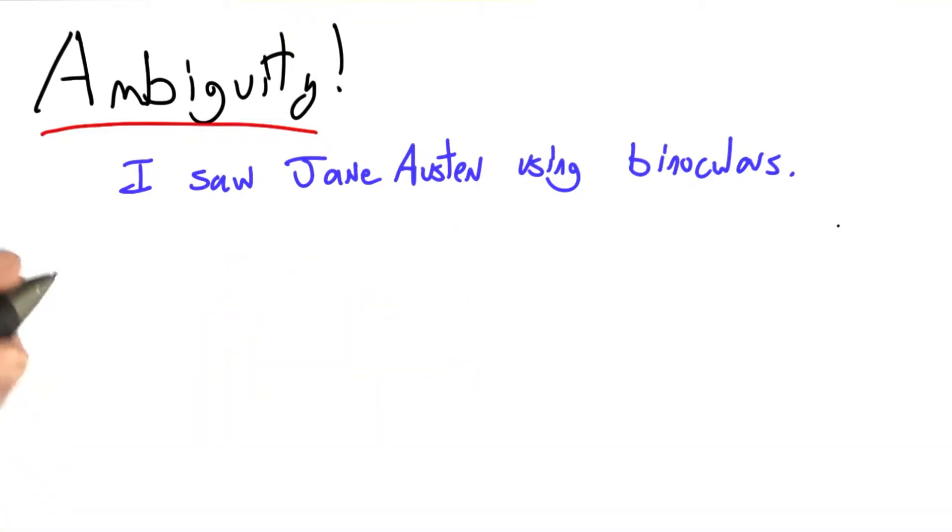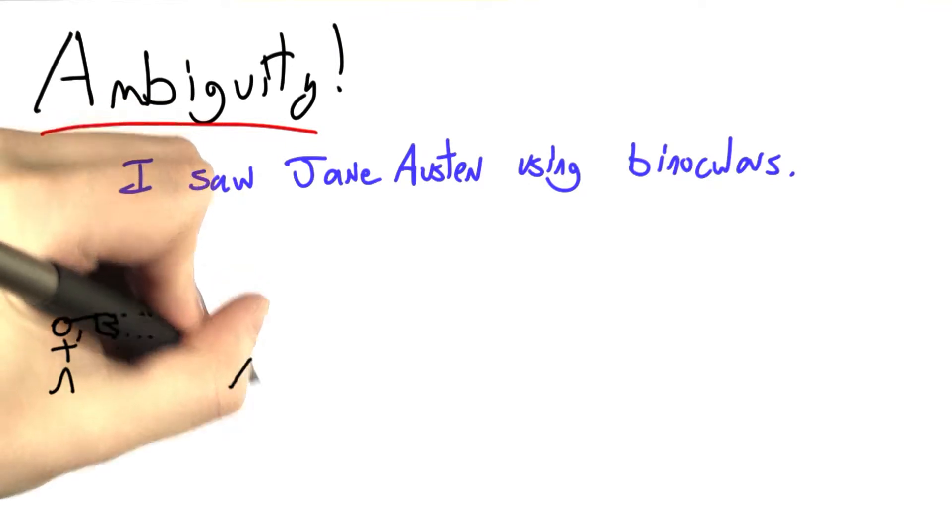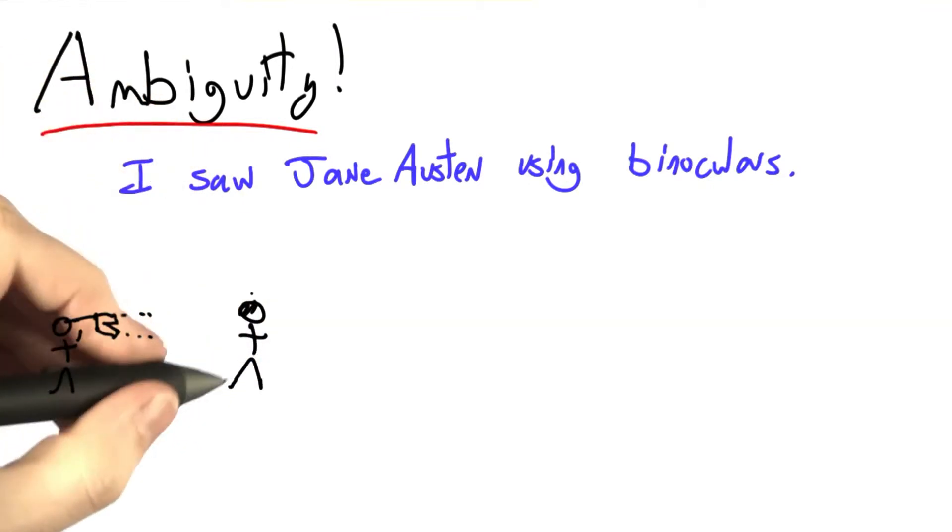It's relatively clear what this means, right? Here's me. I have binoculars, or perhaps pants, but let's imagine that they're binoculars. And I'm looking through them, and over here in the distance, I see Jane Austen.